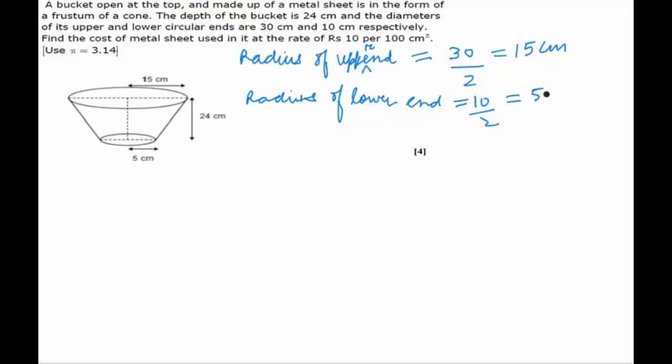Now we are supposed to find out the cost of the metal sheet used in it at the rate of rupees 10 per 100 cm square. So the metal sheet that would be used would be for making this curved surface and the bottom surface. So the area that would be total, that would be for the base area and the curved surface area. Therefore we first find out what is the slant height.